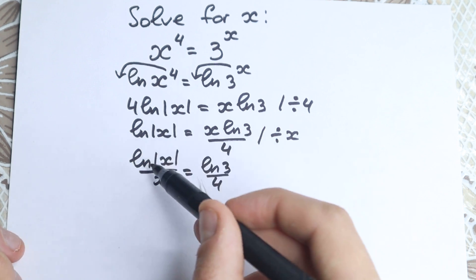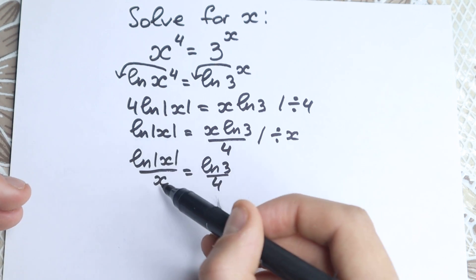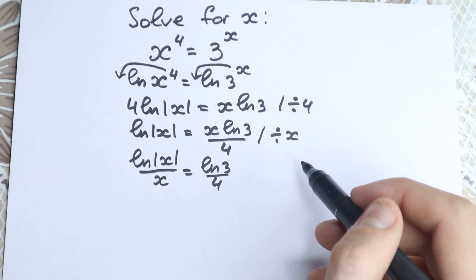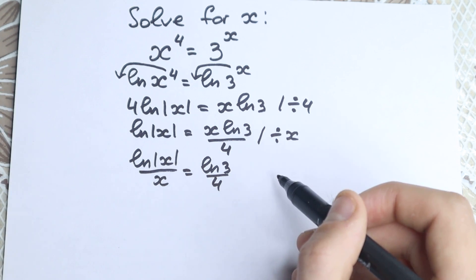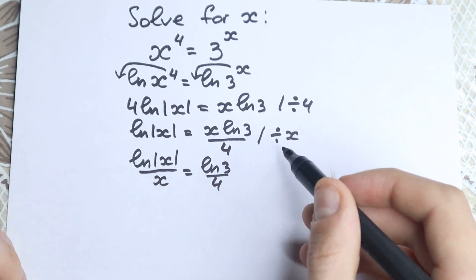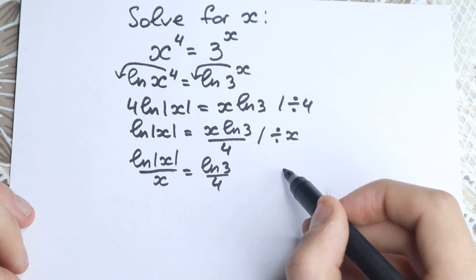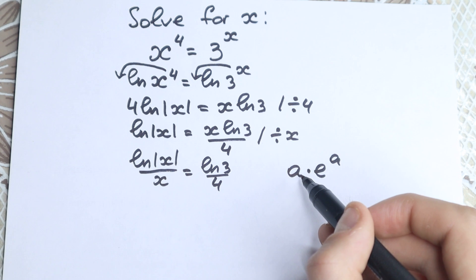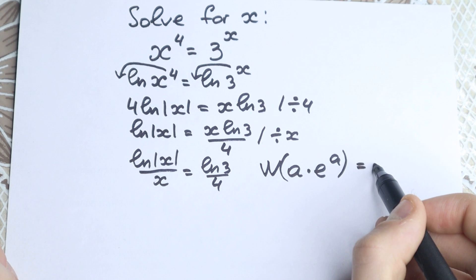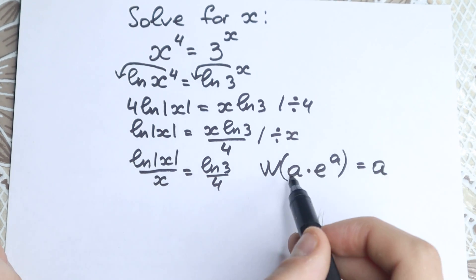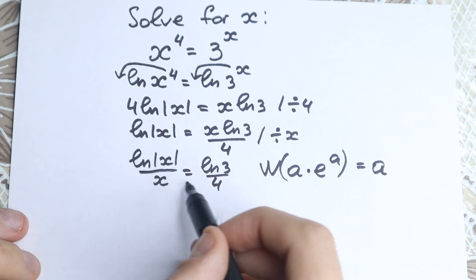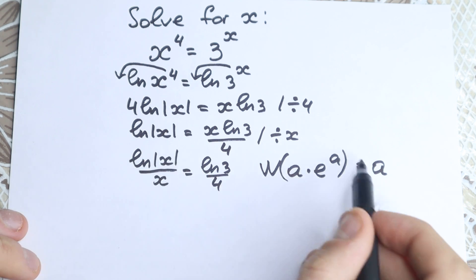This is not an easy expression because we have natural log of x in the numerator and x in the denominator, which is really hard to solve by inspection. For this we need to know about the Lambert W function. This important function helps us a lot: if you have an expression of the form a times e to the power a — where a is whatever expression you want — then applying the Lambert W function gives you back just a. Let's try to create that expression instead of natural log of the absolute value of x over x, starting with the positive case.